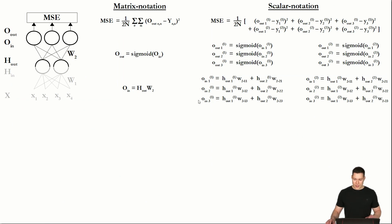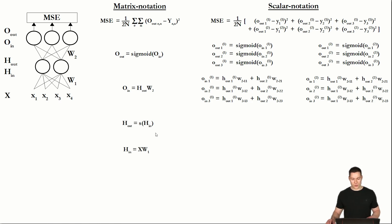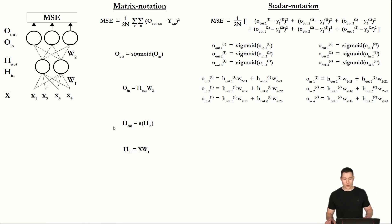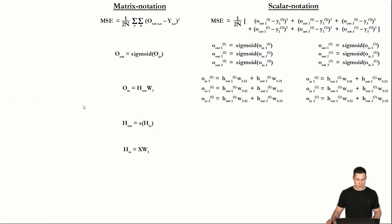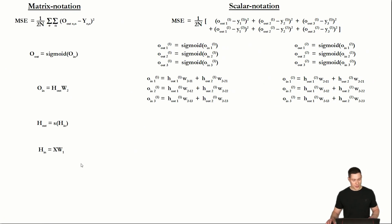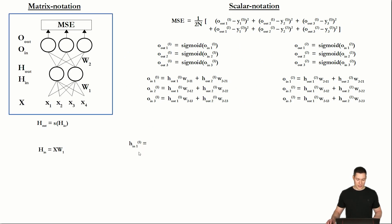Here are the scalar notation equations. Up until this point, we were only concerned with this part of the neural net, but now we have to consider the whole neural net, so we also have to write these equations in scalar notation. We need some more space, so let's remove the neural net diagram and spread out the equations. To calculate H_in_1 of example 1, we simply compute the dot product of the X values and the respective weights leading to that node.